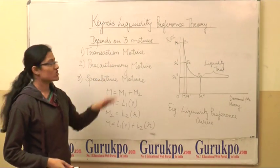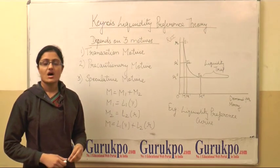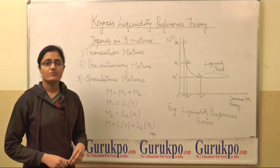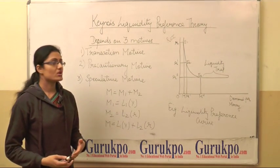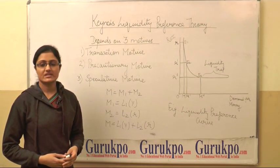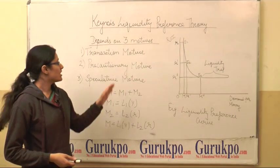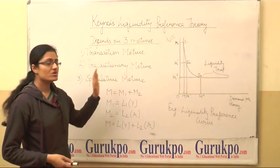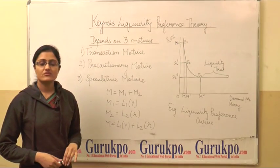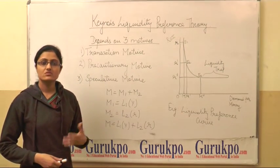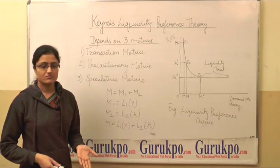Second is precautionary motive. Under this motive, money is demanded for unforeseen contingencies, such as unemployment and sickness. In this motive also, the demand for money depends upon the level of income.